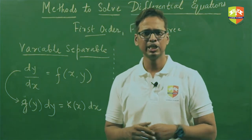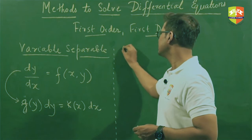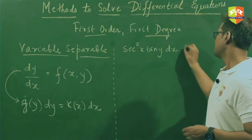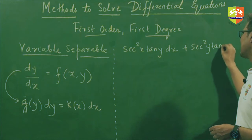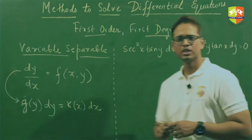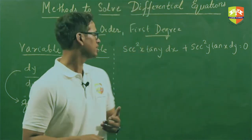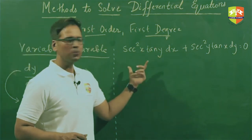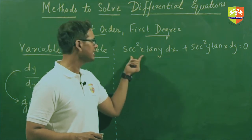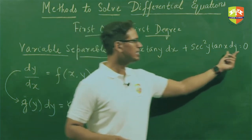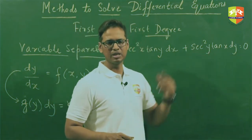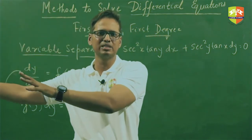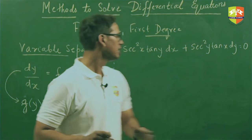To give you an example, let's solve the differential equation: sec²(x) tan(y) dx + sec²(y) tan(x) dy = 0. Right now the dx term contains both x and y terms, and similarly the dy term. We need to separate out these variables so that y terms are grouped together and x terms are grouped together.